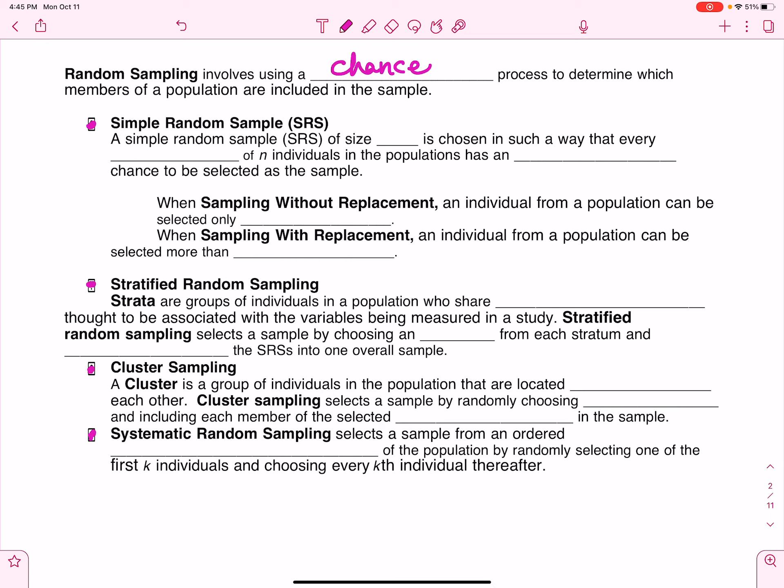So a simple random sample. What does this look like? Well, it's defined as a simple random sample of size N is chosen in such a way that every group of that size, every group of N in the population has an equal chance of being chosen. So what is that going to look like? Well, a simple random sample, for lack of a better word, a simple way to think about it.